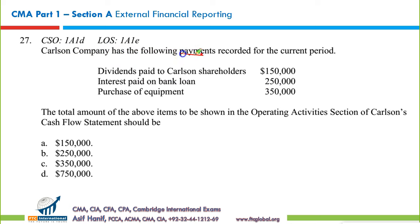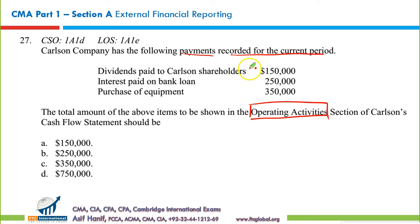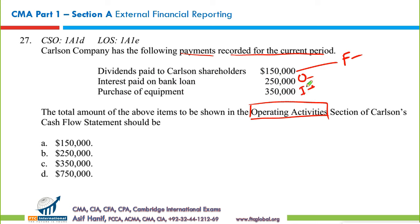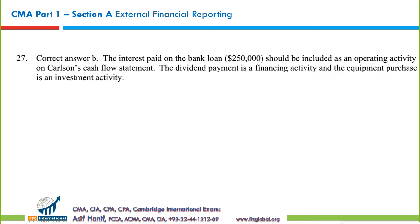Question 26: Carlson Company's payments include: dividends paid to shareholders (financing outflow under US GAAP), interest paid on bank loan (operating outflow — $250), and purchase of equipment (investing outflow). Since only the interest paid is an operating outflow, the total shown in operating activities is $250 — making B the correct option.